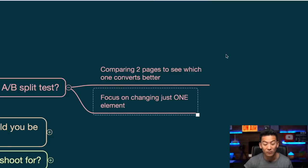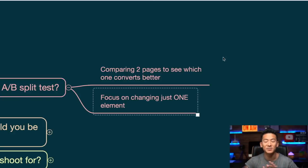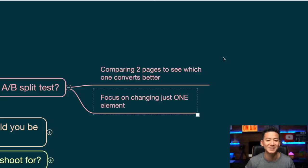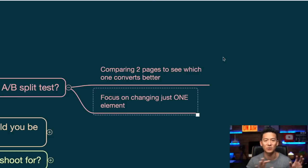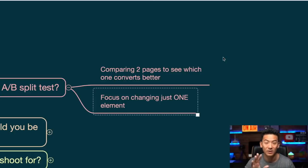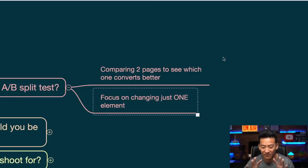All you're doing really is focusing on changing just one element. Don't try and split test everything, because the more things that you try and split test — and a lot of people will split test an arrow, the background color, the button, all sorts of different things — a lot of them are a waste of time. I'm going to show you the only thing that you really should be split testing.